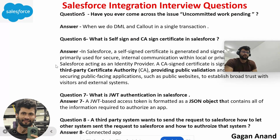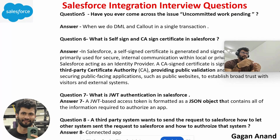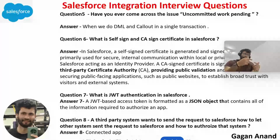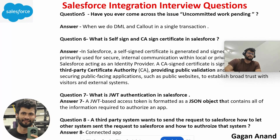Fifth question: have you ever come across the 'Uncommitted Work Pending' error? This error usually occurs when you try to do a DML operation and a callout in the same transaction. For example, if an agent is closing a case and your Apex class is first updating the case record and then making a callout — doing DML plus callout in a single transaction — you will get this error. The recommendation is: don't do DML and callout in the same transaction. To fix this, use a future method to separate the callout into a separate transaction.